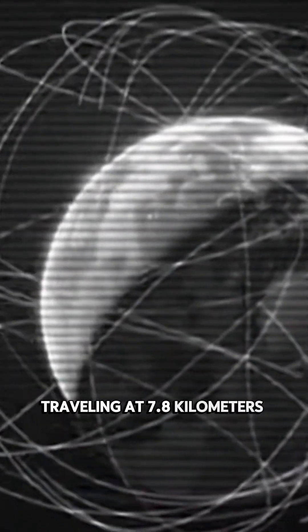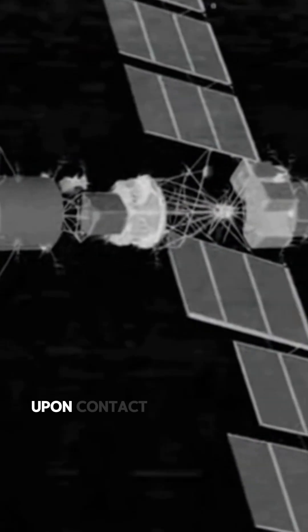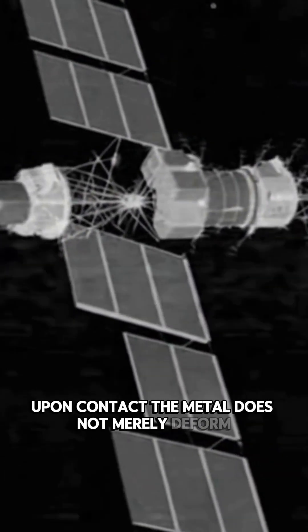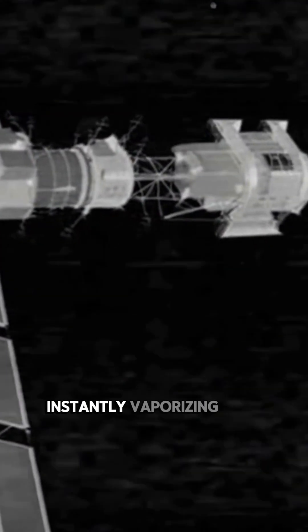In this vacuum, a single centimeter-sized screw traveling at 7.8 kilometers per second delivers the kinetic yield of a 550-pound object. Upon contact, the metal does not merely deform. It undergoes a hydrodynamic shock, instantly vaporizing into plasma.